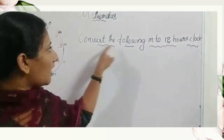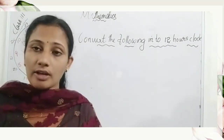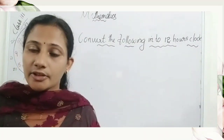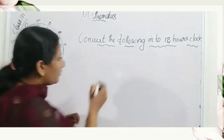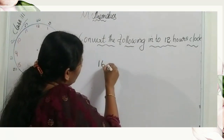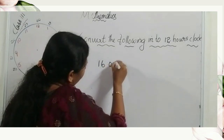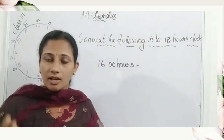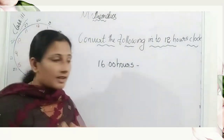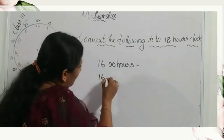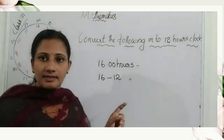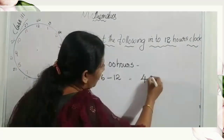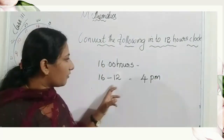Now let us see how to convert the following time into the twelve hour clock system — meaning we are given twenty-four hour time and need to convert it to twelve hours. For example, sixteen hours — sixteen minus twelve equals four. So sixteen hours is four p.m.